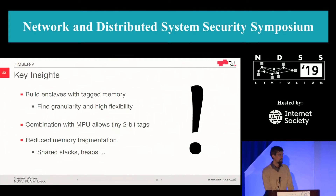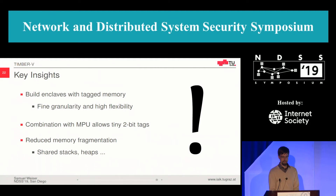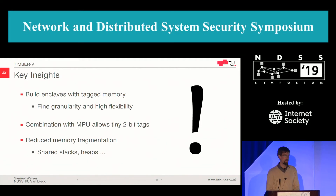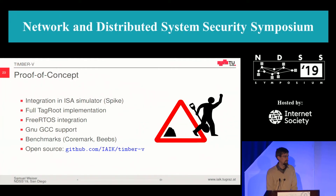This brings me to the end. Key insights: we built enclaves for the first time with tagged memory, giving very fine granularity and high flexibility at runtime for changing tags efficiently. By combining tag memory with an MPU, we only need tiny two-bit tags. This reduces memory fragmentation — we can have shared stacks and shared heaps on small systems. The whole code base is online: we did an integration in the Spike RISC-V instruction set simulator, a full implementation of TechRoot, integration with FreeRTOS, GCC support, and many benchmarks. It's open source — have fun playing around with it.